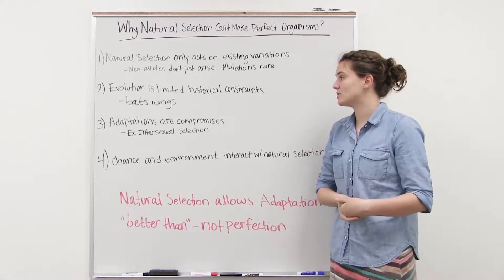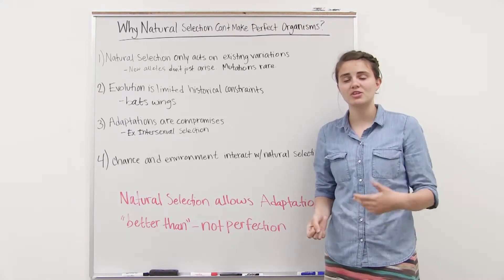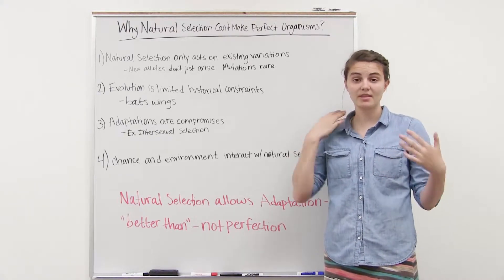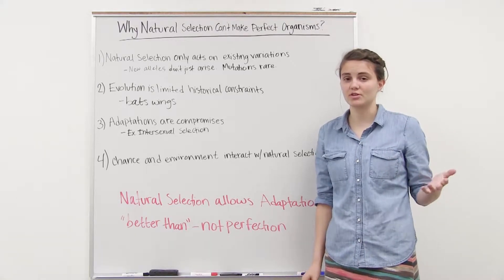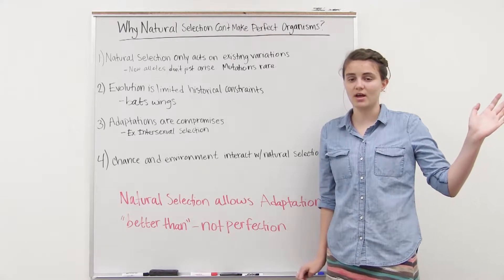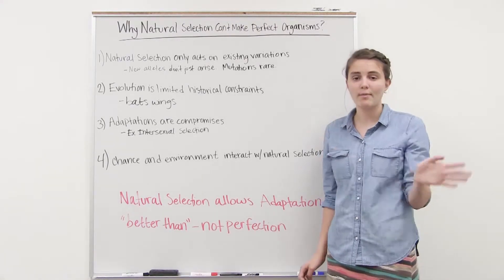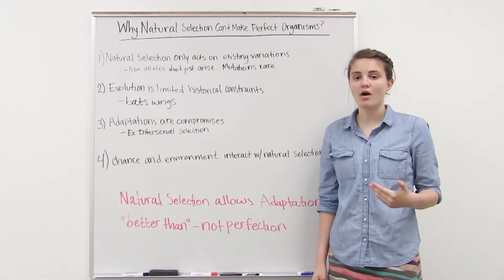The second reason is that evolution is limited by historical constraints. So populations have been evolving for hundreds and hundreds of years with descent and modification. Natural selection is not just going to wipe all of those changes clean and start from scratch. It's going to work off of those.